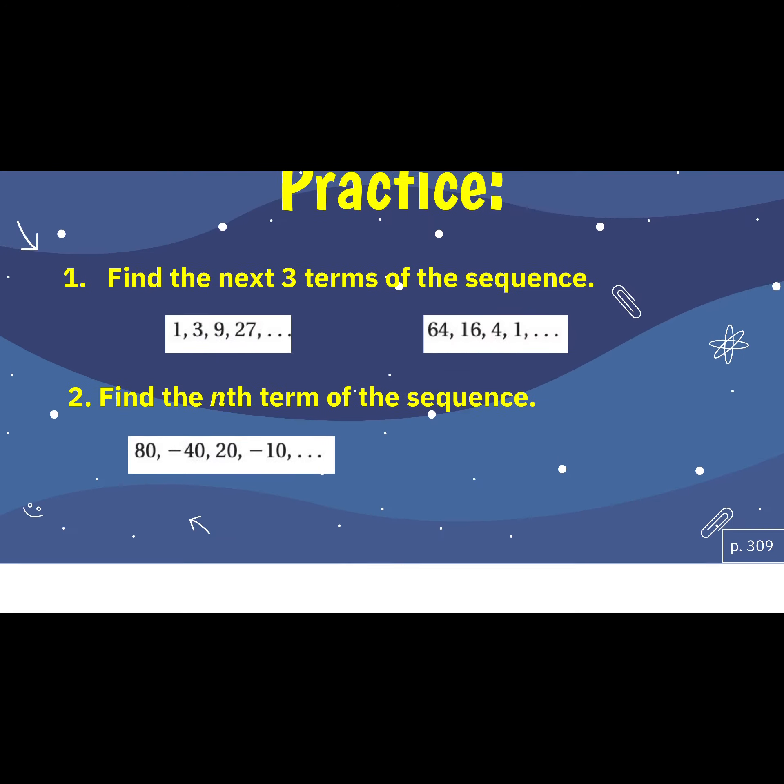I didn't show you an example of number two, but I'm trusting you guys will be able to nail it. Find the nth term — that means we're using that equation. Using the equation is really going to help. That might help you find the common ratio. Show these to me, then you'll earn the worksheet.